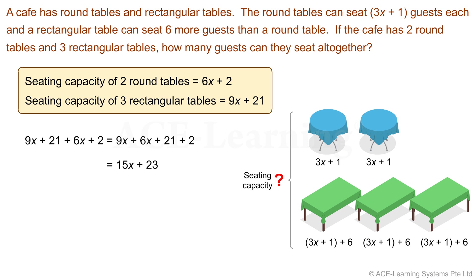Let's write the final statement. The cafe can seat 15x plus 23 guests. Superb! We have solved the problem.